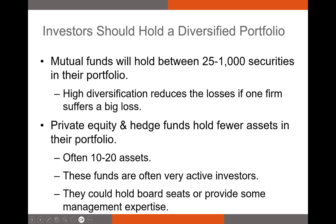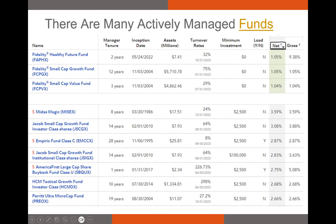On the other hand, funds like private equity and hedge funds typically hold fewer assets — generally between 10 and 20. The reason is that these funds are very active investors. Not only are they buying shares or bonds and taking ownership stakes, they're also likely sitting on the board of firms whose equity they own, providing advisory expertise, or even being part of management. There are a huge number of actively managed funds, so let's set aside private equity and hedge funds for the moment and look at actively managed mutual funds.